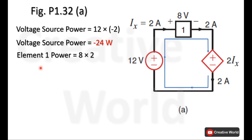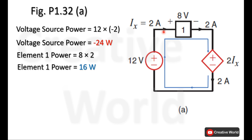Similarly, element 1 power will be the voltage across it — 8 volts — multiplied by the current through it — 2 amperes. In this case, the current is entering from the positive terminal and leaving from the negative terminal, so this current will be taken with a positive sign. Therefore, element 1 power will be 16 watts, and this power is being absorbed by element 1.